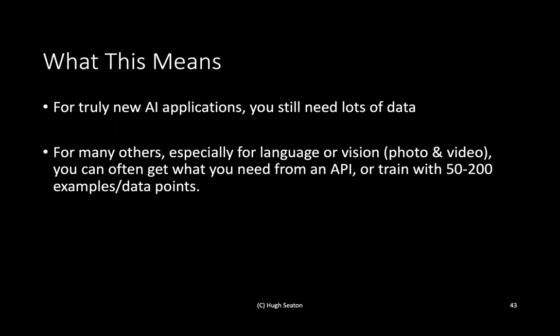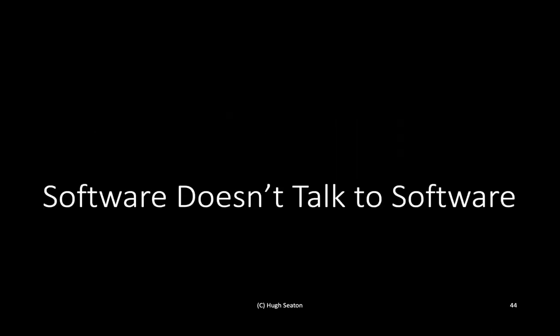For new AI applications you still need a lot of data for things like recognizing patterns, though sometimes statistics are already good enough. But for language or vision, with pre-trained models you can get a lot of what you need from 50 to 200 examples — obviously get a real data scientist to tell you the exact number. The key thing is you're not looking for 100,000 or 200,000 data points anymore; with pre-trained models that scale is within reach of most companies.